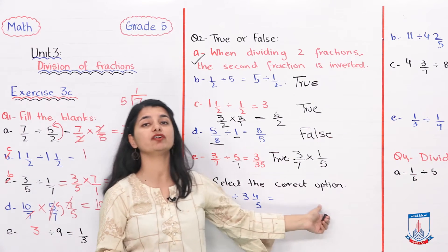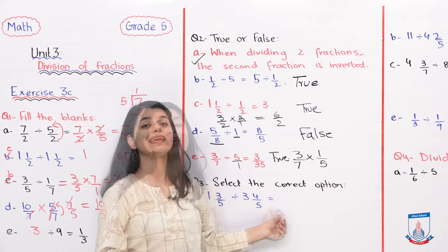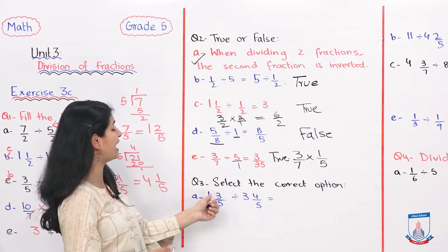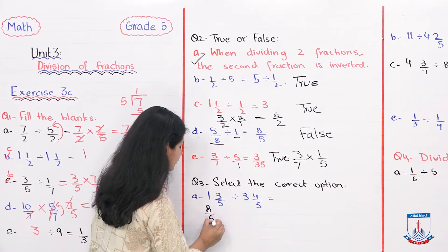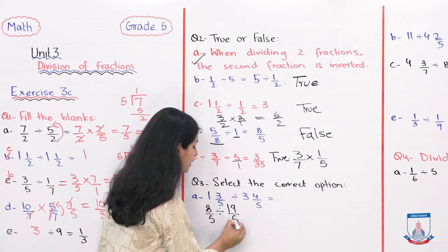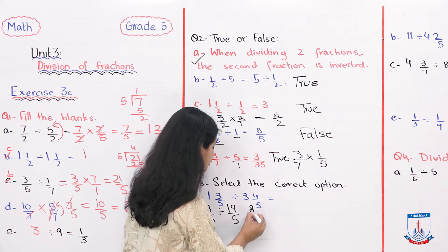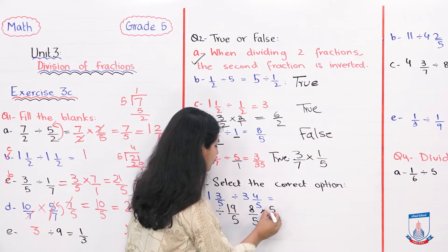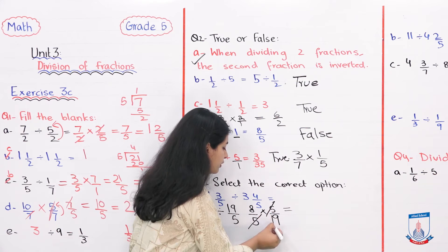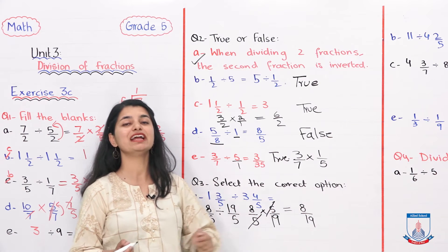Question number 3: select the correct option. 1 whole 3 by 5 divided by 3 whole 4 by 5. First we convert to improper fractions: 5 times 1 plus 3 is 8 over 5. Next is 5 times 3 plus 4, which is 15 plus 4, 19 over 5. Now we multiply by taking the reciprocal: 8 over 5 into 5 over 19. Cancel these 5s and we get 8 by 19, so this option is the correct answer.